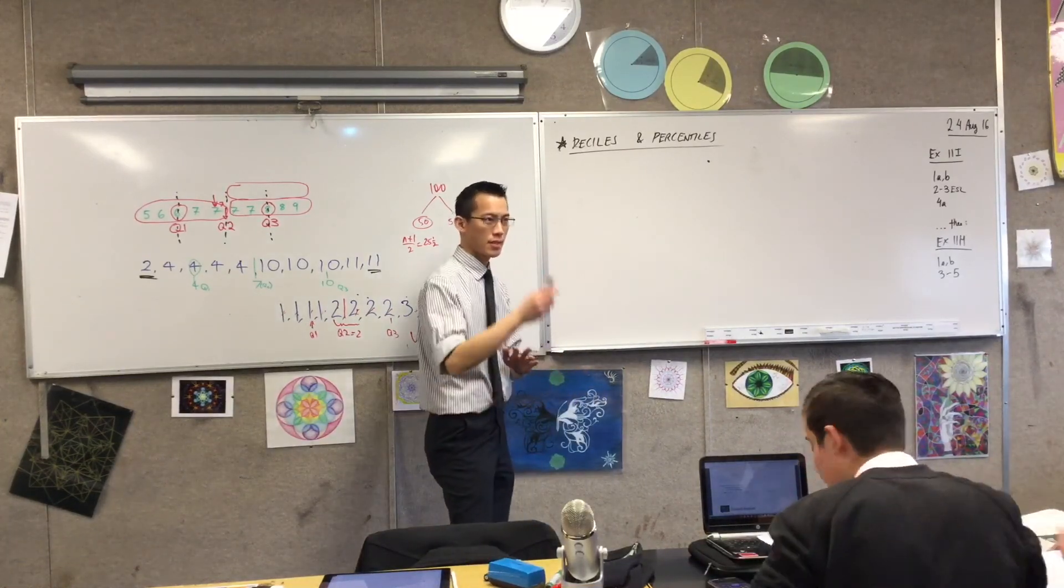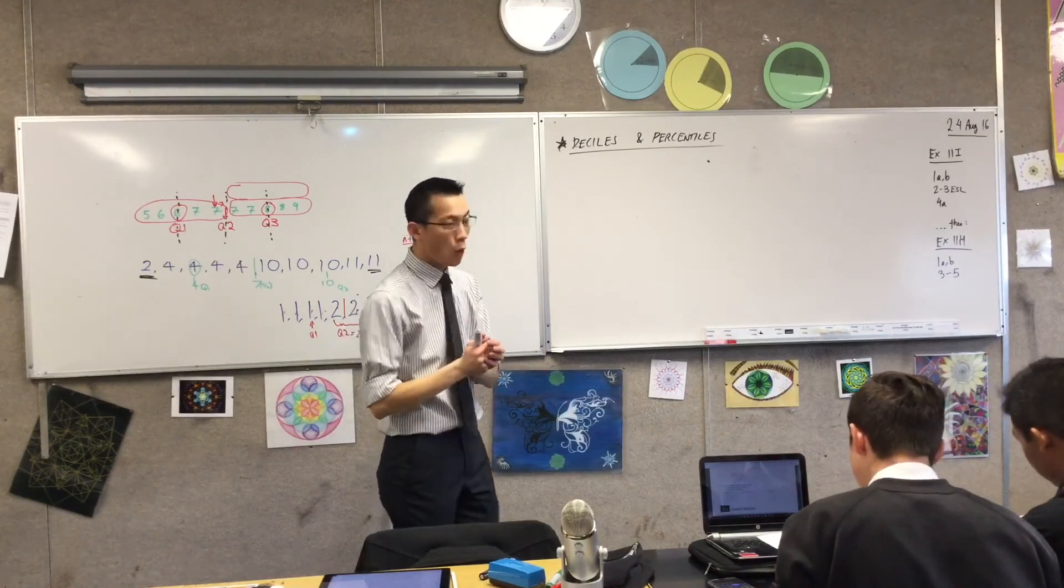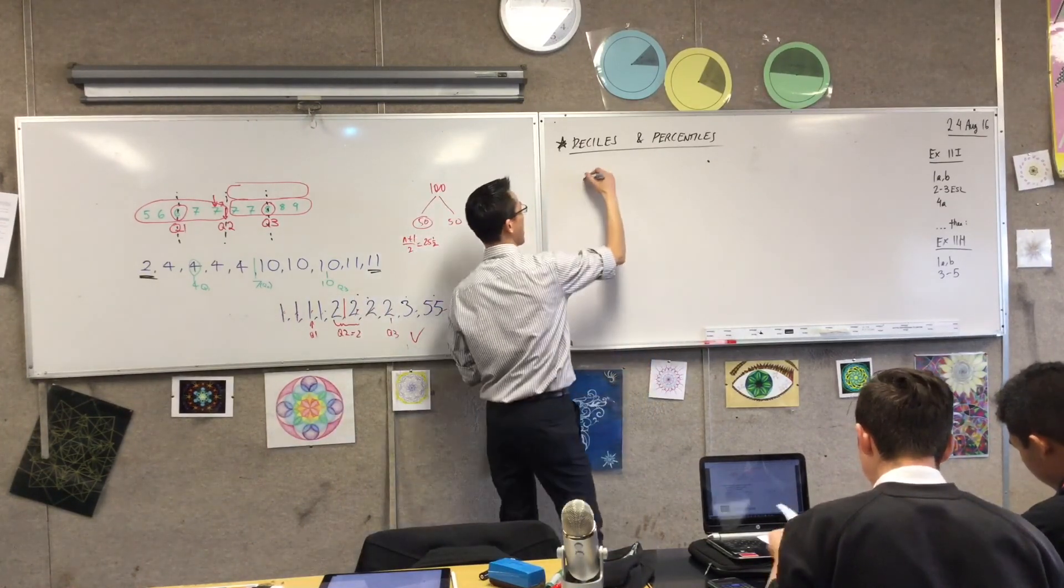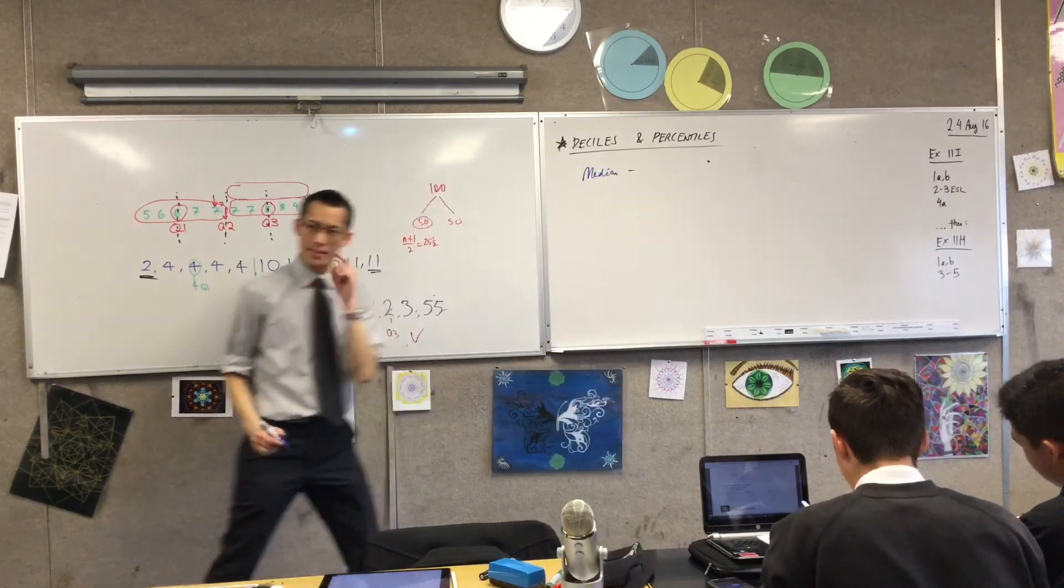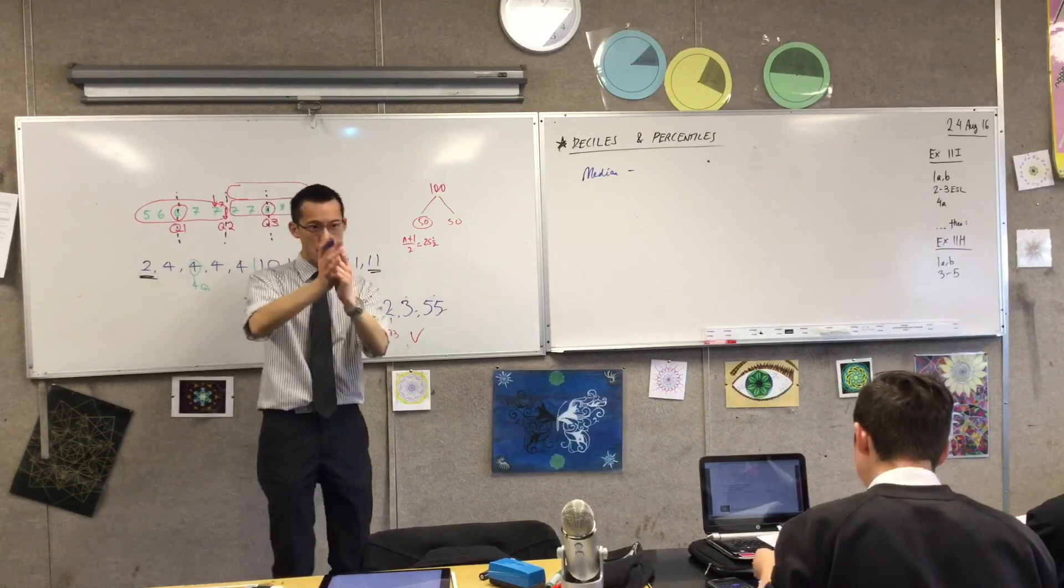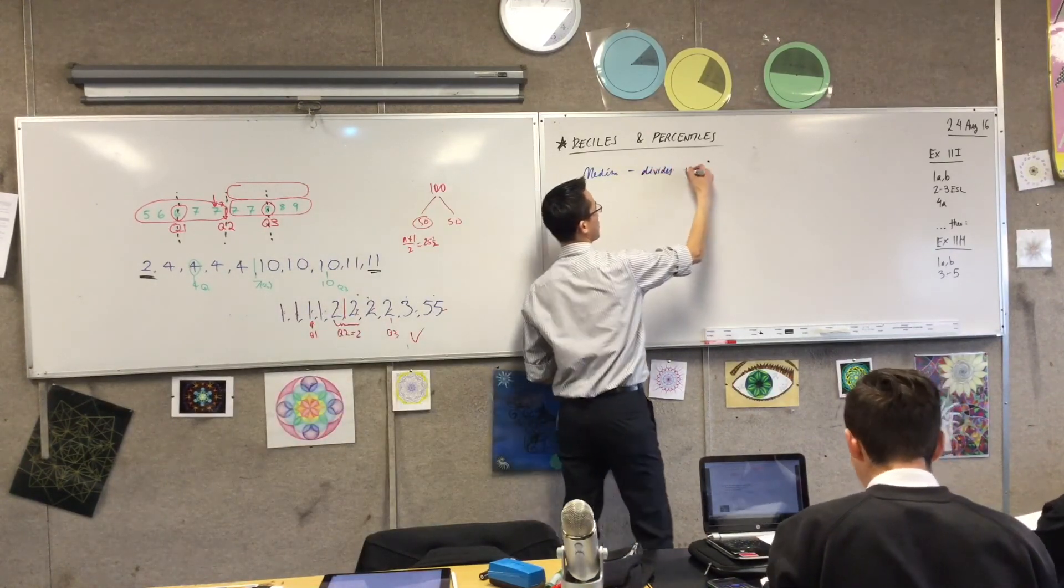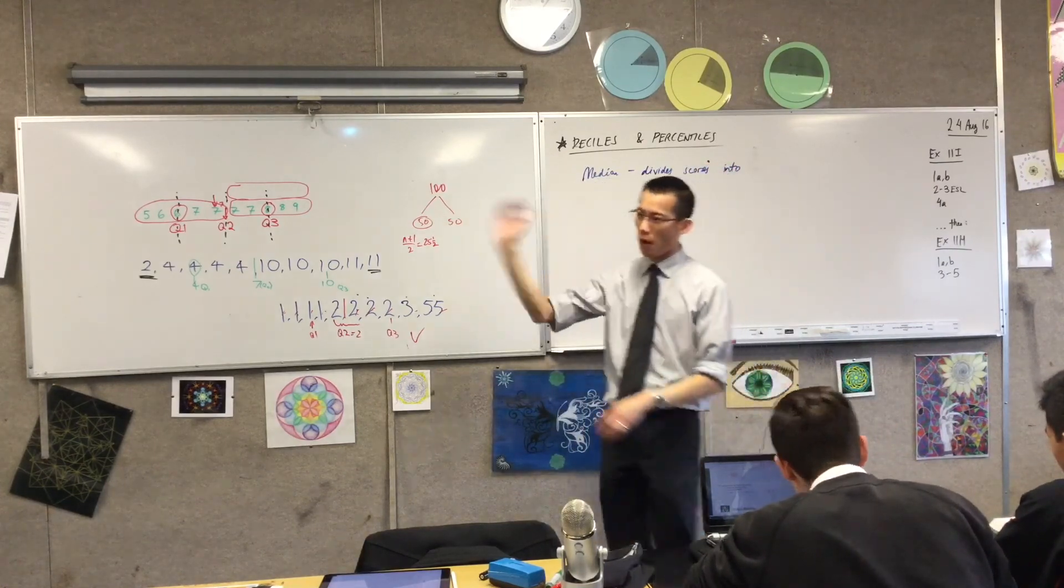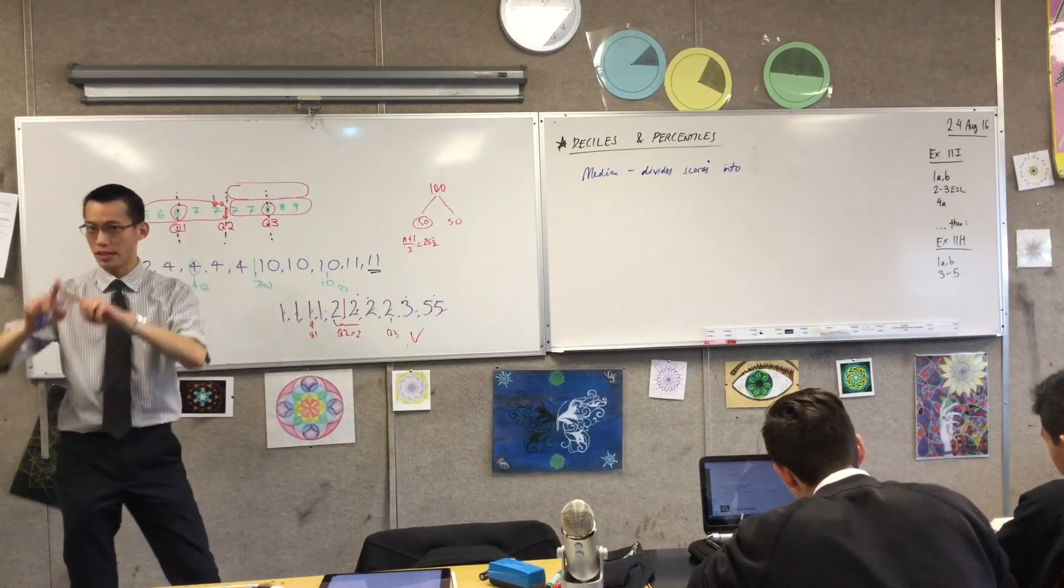Our definition, like when we talked about the median and our definition of that, we called it the middle score, but we said that's not the best way to describe it. We would say that the median divides the scores into a bottom half and a top half.